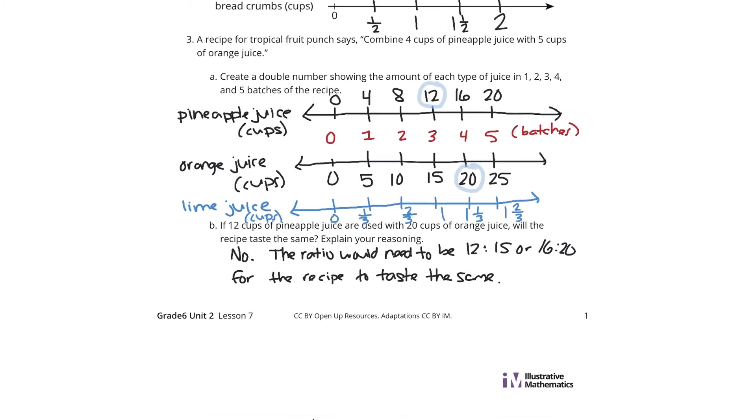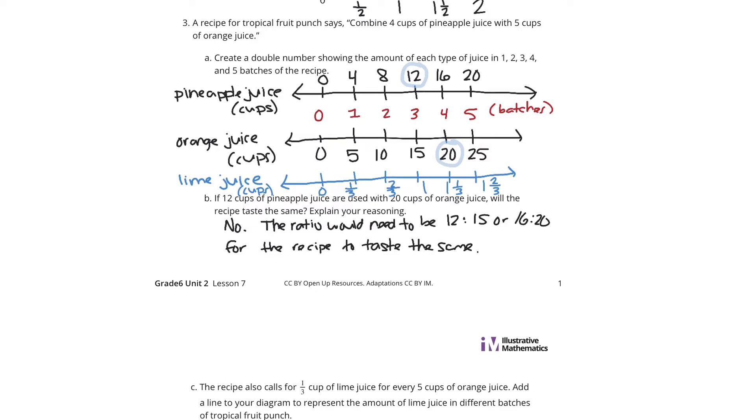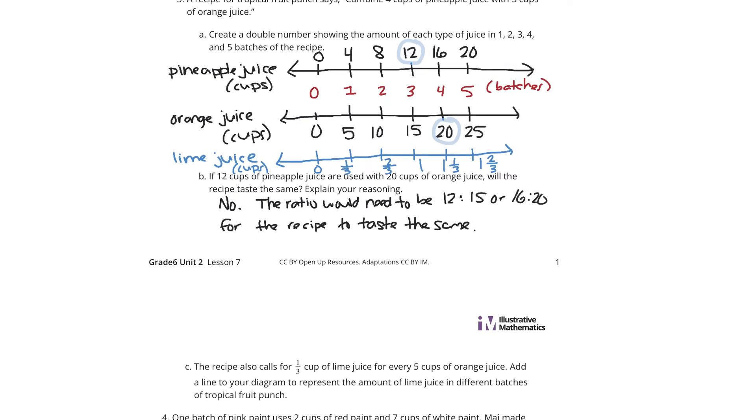Forgot about that question. Sorry about that. So I think we answered the question. Add a line to your diagram to represent the amount of lime juice in different batches. Yep. We got it. Let's continue on.